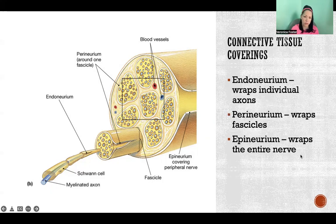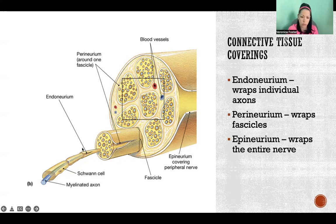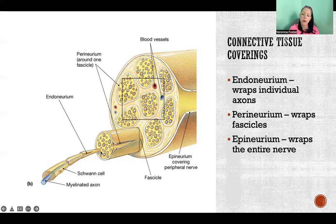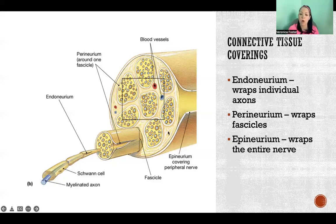Each of those levels of organization are covered by connective tissue coverings. The endoneurium is the connective tissue covering of an individual axon — it is outside of the myelination for axons that are myelinated, surrounding the outside of the myelin. Then we have our fascicle, and the perineurium is the connective tissue covering of a fascicle. Then we group together multiple fascicles to make up the whole nerve, and we have the epineurium — that's the connective tissue covering wrapping around the entire nerve.